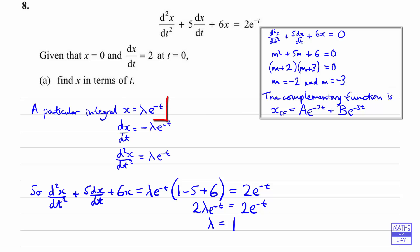Looking at the coefficients of e^(−t), we've got 2λ = 2, in other words λ = 1. So now we can write down the particular integral. Because we know what λ is, the particular integral — PI — is one times e^(−t), in other words e^(−t). Let's just put that to one side.